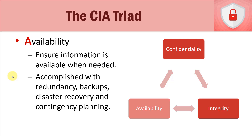You can't have confidentiality and integrity without availability. We can keep our data secure and ensure that nobody modifies it, but if we don't make it available to those that need it, then what's the point of having confidentiality and integrity? It's really a balancing act, because the more available we make it, the harder it is to secure and keep integrity in place. Availability is typically accomplished with redundancies, backups, disaster recovery, and contingency planning methodologies.